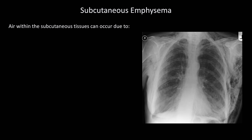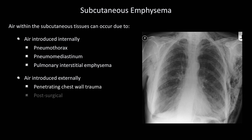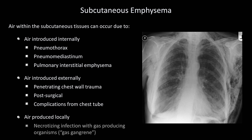Relative to the bones, there is comparatively less to look for in the soft tissues. One quite dramatic abnormality is subcutaneous emphysema — air within the subcutaneous tissues. This can occur due to air being introduced from within, as in a dissecting pneumothorax, pneumomediastinum, or pulmonary interstitial emphysema, all of which can complicate positive pressure ventilation. Sub-Q emphysema can also come from air introduced externally via penetrating chest wall trauma, thoracic surgery, or chest tube complications. Finally, sub-Q gas can be produced locally by a necrotizing infection with a gas-producing organism, otherwise known as gas gangrene.